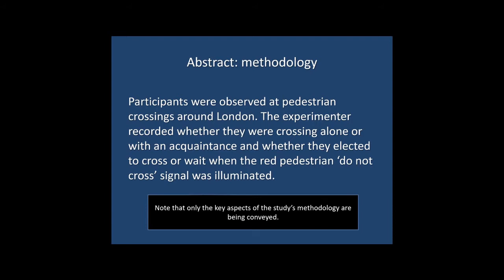You also need to explain how the variables of your study work. In this case the author notes that the experimenter recorded whether the person was crossing alone or with an acquaintance, and then whether they elected to cross or wait when the red pedestrian 'do not cross' signal was illuminated. If you were doing an experimental study you'd want to give a little detail about the independent variable — what you were manipulating — and the dependent variable — what you were measuring. But that's really the level of detail you want to go into; it's important to keep things concise.